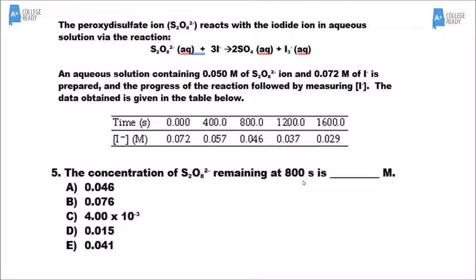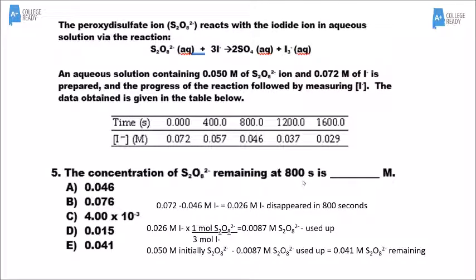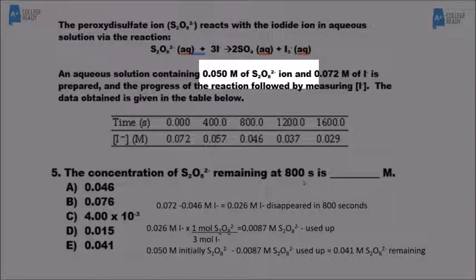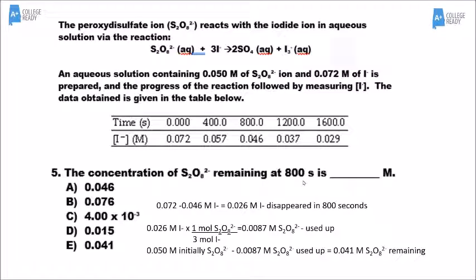The previous question asked about iodide ion; this one asks about the S₂O₈ ion. If we figure out how much I⁻ disappears by 800 seconds — going from the initial value of I⁻ to what it was at 800 seconds — then for every three moles of I⁻, we get rid of one mole of S₂O₈. The problem tells us the initial value was 0.05 molar. Taking 0.05 minus 0.0087 gives 0.041, and that answer would be E.